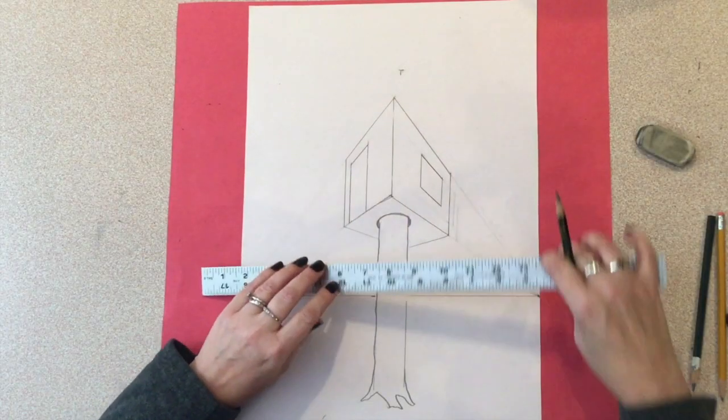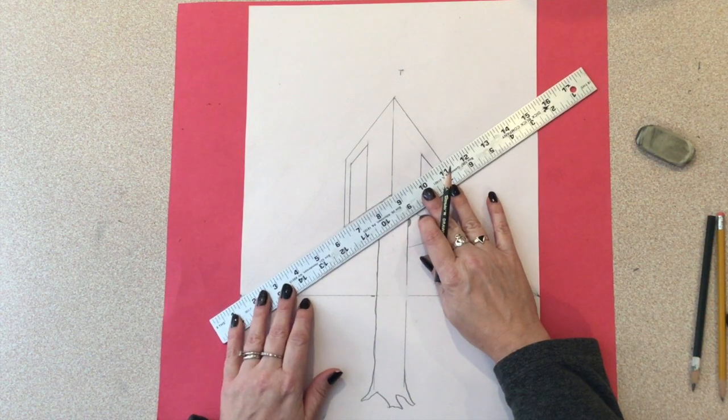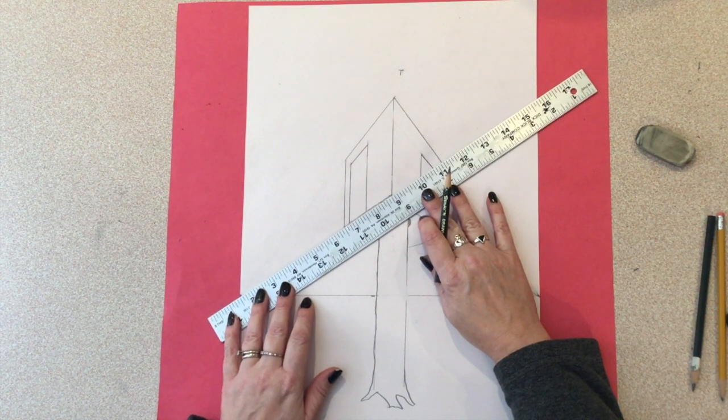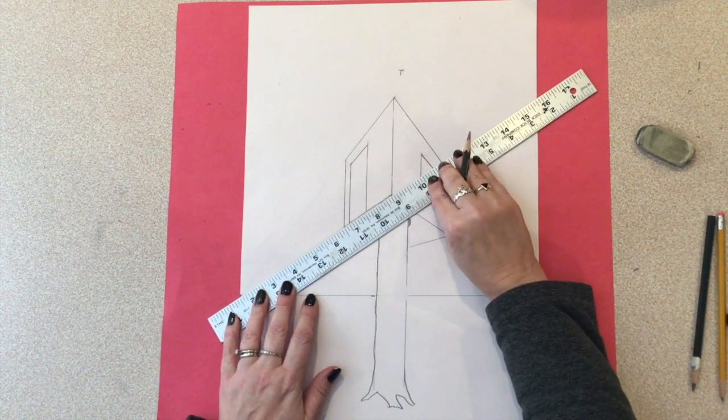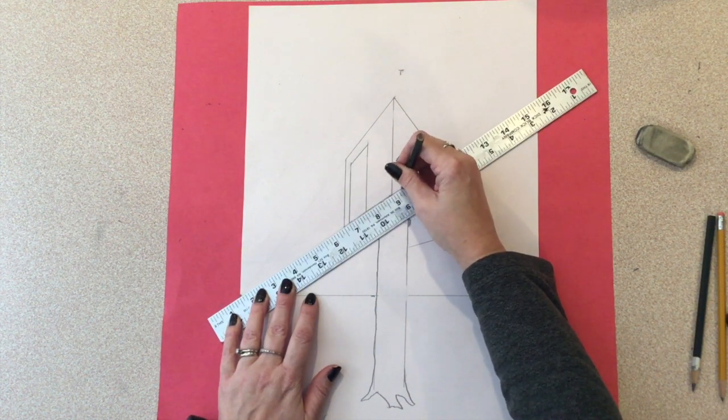To make a balcony on the right side of your treehouse, line your ruler up with the vanishing point on the left side. You are going to be extending the length of the floor line.